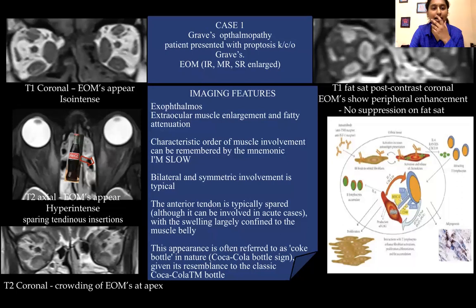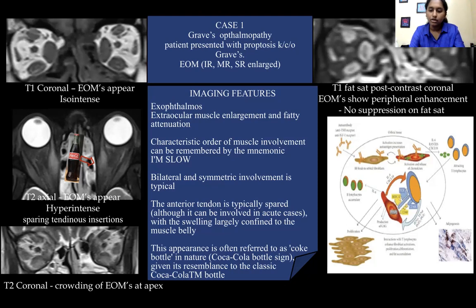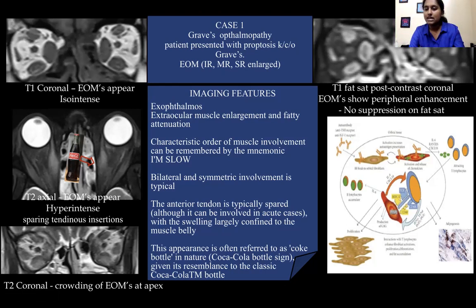On T1 coronal, the extraocular muscles appear iso-intense. On T2 axial images, the extraocular muscles appear relatively hyper-intense, and there is sparing of the tendon insertion — which is one point that differentiates it from orbital pseudotumor, where the tendon insertion would also be involved. On T2 coronal imaging, there is crowding of the extraocular muscles at the apex. On T1 fat-sat post-contrast coronal images, the extraocular muscles show peripheral post-contrast enhancement with no suppression on fat-sat seen within the muscles. However, the orbital fat-containing areas around the extraocular muscles are showing suppression on fat-sat.